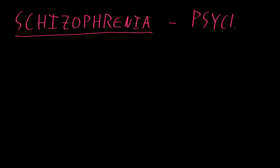Psychosis refers to some specific abnormalities of cognition and often, characteristically, abnormal perceptions of reality. These may include hallucinations, which are sensory perceptions without actual stimuli, like hearing or seeing things that aren't actually there, or delusions, which are fixed false beliefs not explainable by a person's culture, like if someone has the idea that someone else is controlling their thoughts.